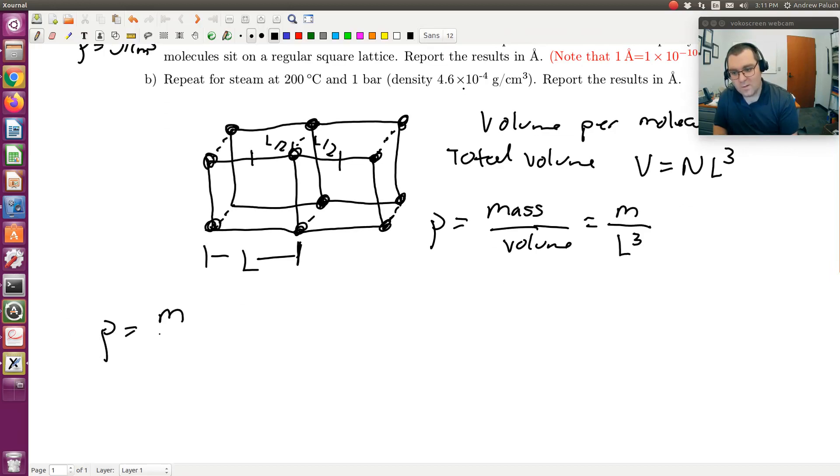So rho is going to be estimated as M over L cubed. L cubed is what I'm trying to solve for. So before I directly solve for L, mass is the mass of a molecule of water.